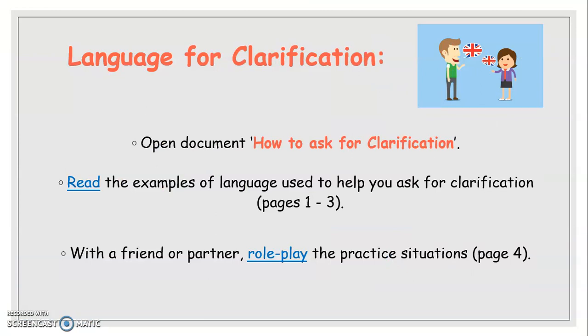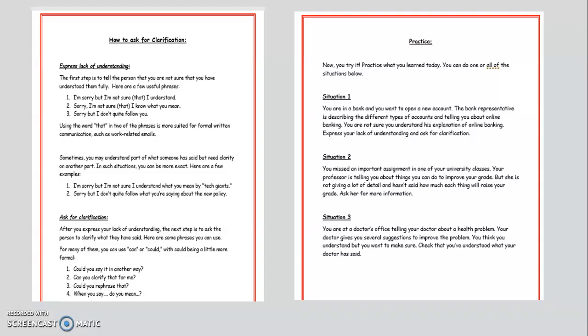So, language for clarification. Open the how to ask for clarification document. Read the examples of language used to help you ask for clarification. With a friend or a partner, role play the practice situations on page four. So, this is the first page of that document on the left, and this is the second page of that document on the right. Now, if we were in class, I would be putting you guys into pairs and you would be completing the practice situations in pairs. But unfortunately, we're not in class. So, if you have a housemate or a friend, or even if you just want to practice in front of the mirror with your hairbrush, you can practice situations one, two, or three. And you can pause this video here while you complete that.